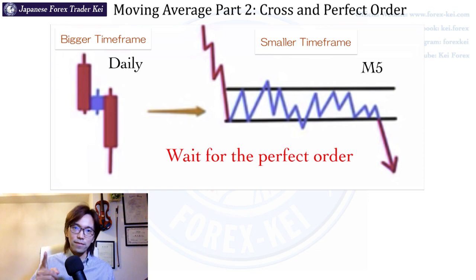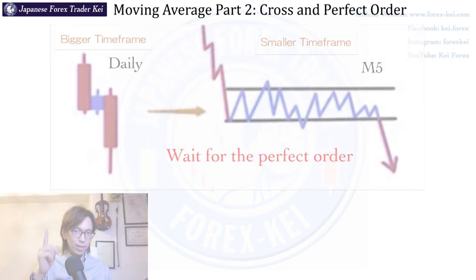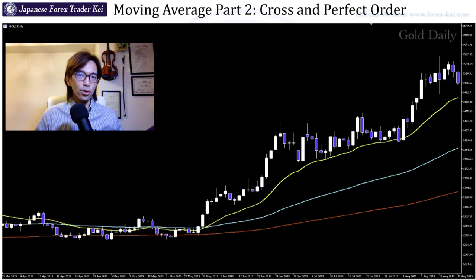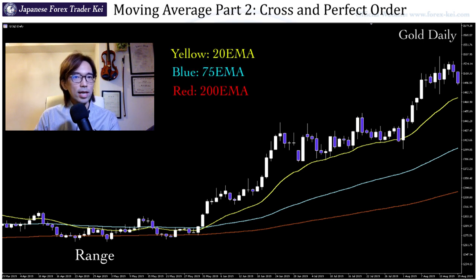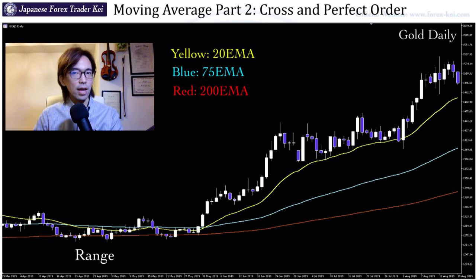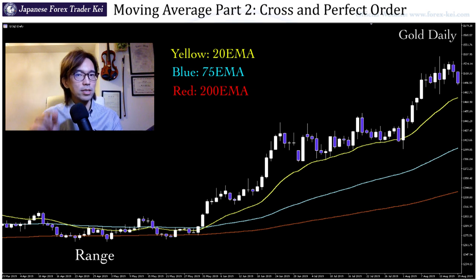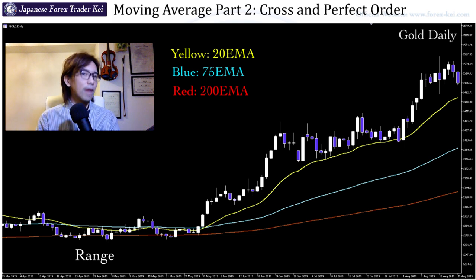Now let me show you that from a real chart example. This is a daily chart on gold, and if you look at the market, previously the market was in a range. If you look at the MAs, they are all interacting with the candles. The yellow line is 20 MA, the blue one is 75 EMA, and the red line is 200 EMA — they are all scrambled together. This is the signal that the market is in the range on this daily chart, and that means you better not trade based on the moving averages.